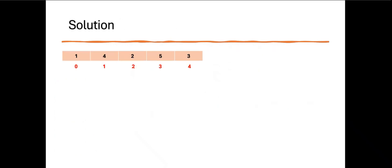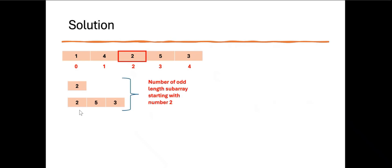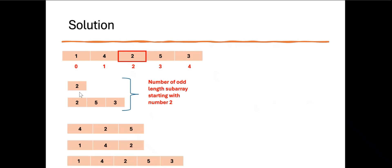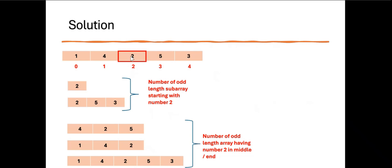This is the input array and the red numbers are the index positions. For the number 2, there are subarrays starting with 2 as the first element. Looking at subarrays where 2 is the first element, we can see there are three such subarrays. So the total number of subarrays starting with 2 is 3.